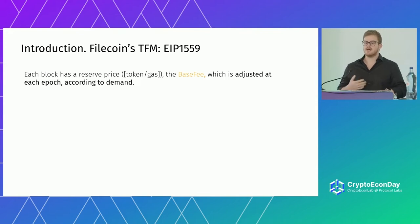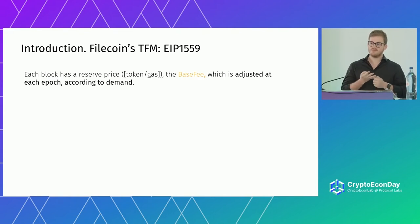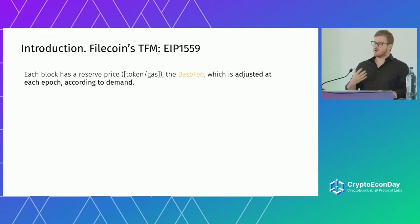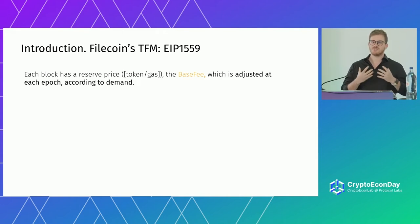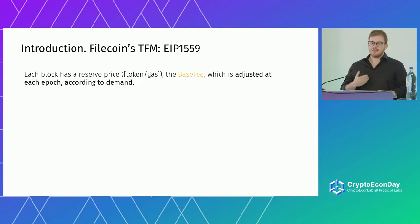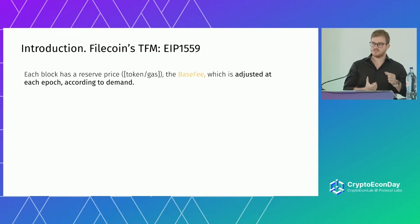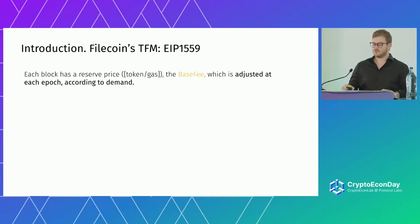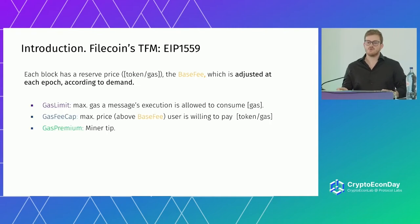So how does this EIP-1559 model work? It has four parameters: one parameter that is protocol-defined, and three parameters that are user input. The first one is what's called the base fee, which can be understood as the minimum amount of token per gas unit that you would pay in order to put your messages inside the block. This base fee is adjusted according to demand — if the demand for block space is high, then the base fee will increase, and if the demand for block space is low, then it would tend to decrease. Furthermore, there are three user-defined parameters.